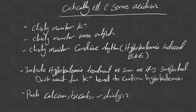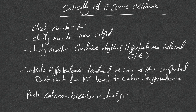In critically ill patients with severe acidosis, closely monitor potassium with serial BMPs and monitor urine output — low or no urine output means potassium and acidosis will worsen together. Monitor cardiac rhythm closely, looking for hyperkalemia-induced EKG changes such as QRS widening, or transition from tachycardia to bradycardia or heart blocks.